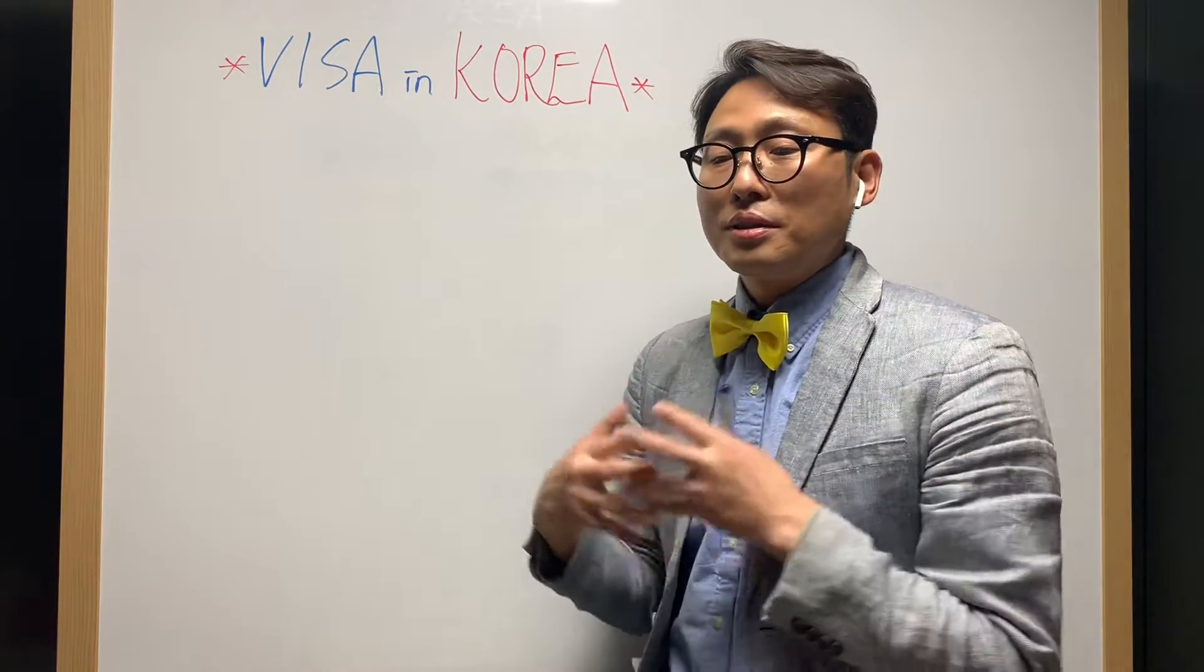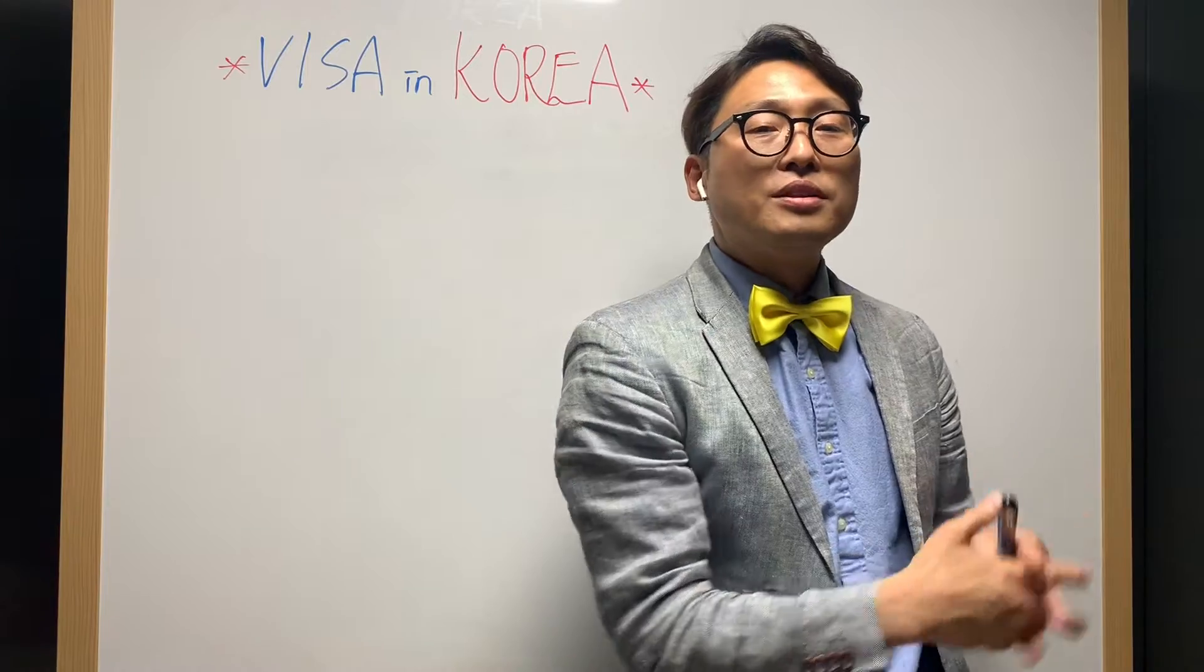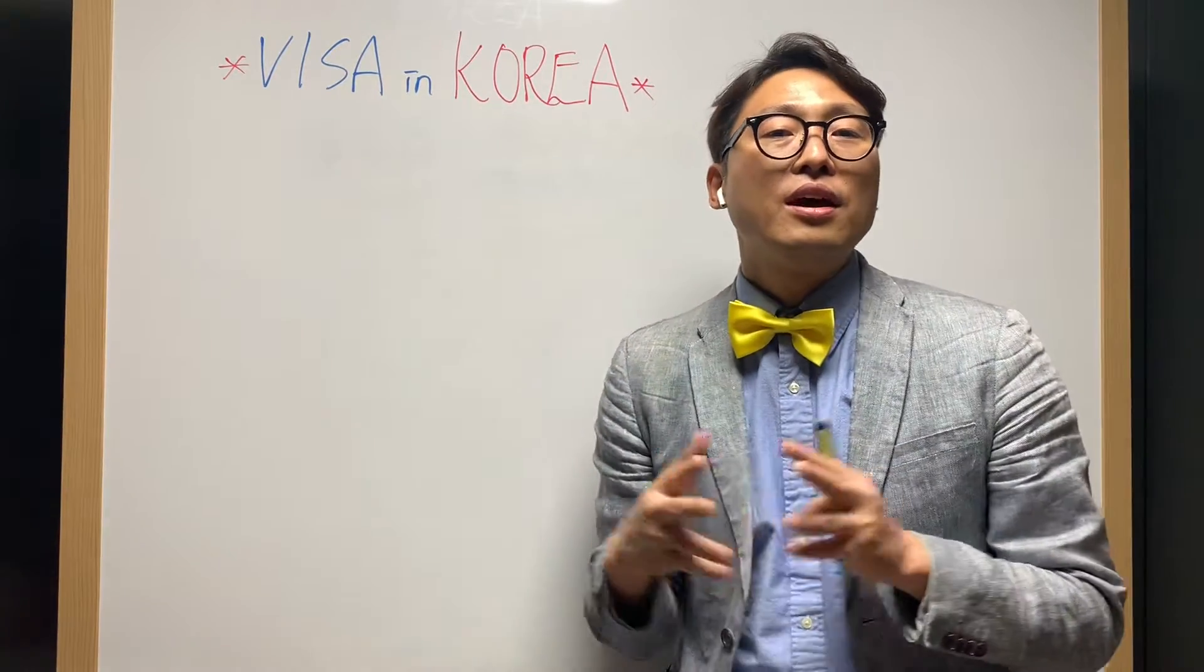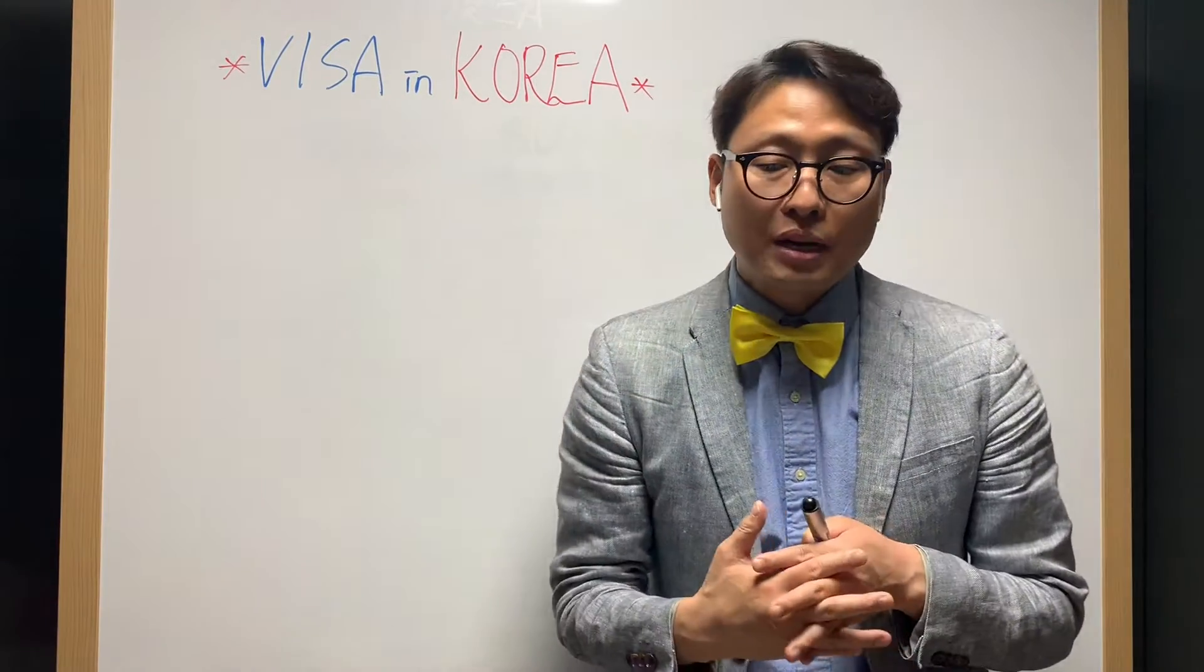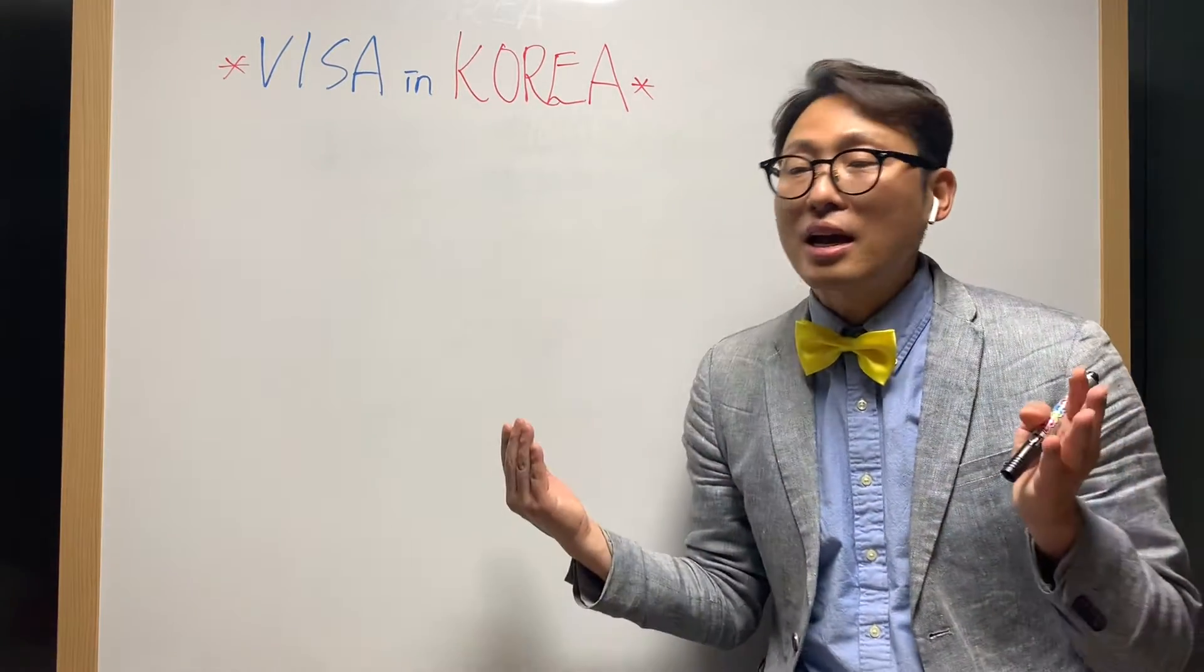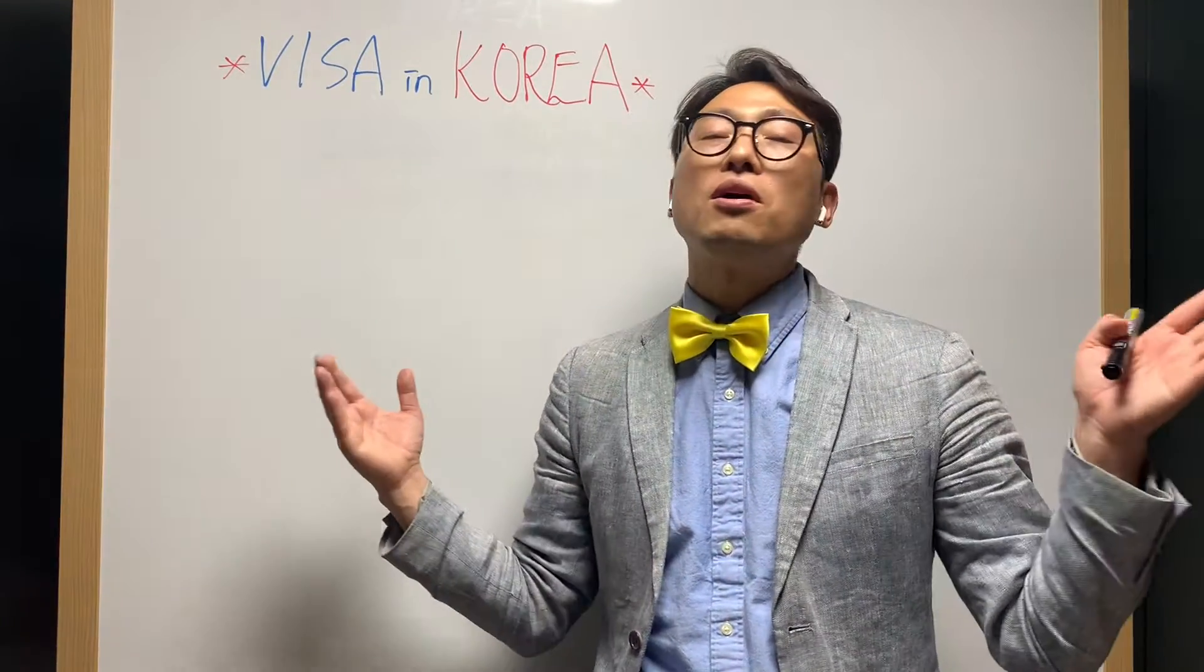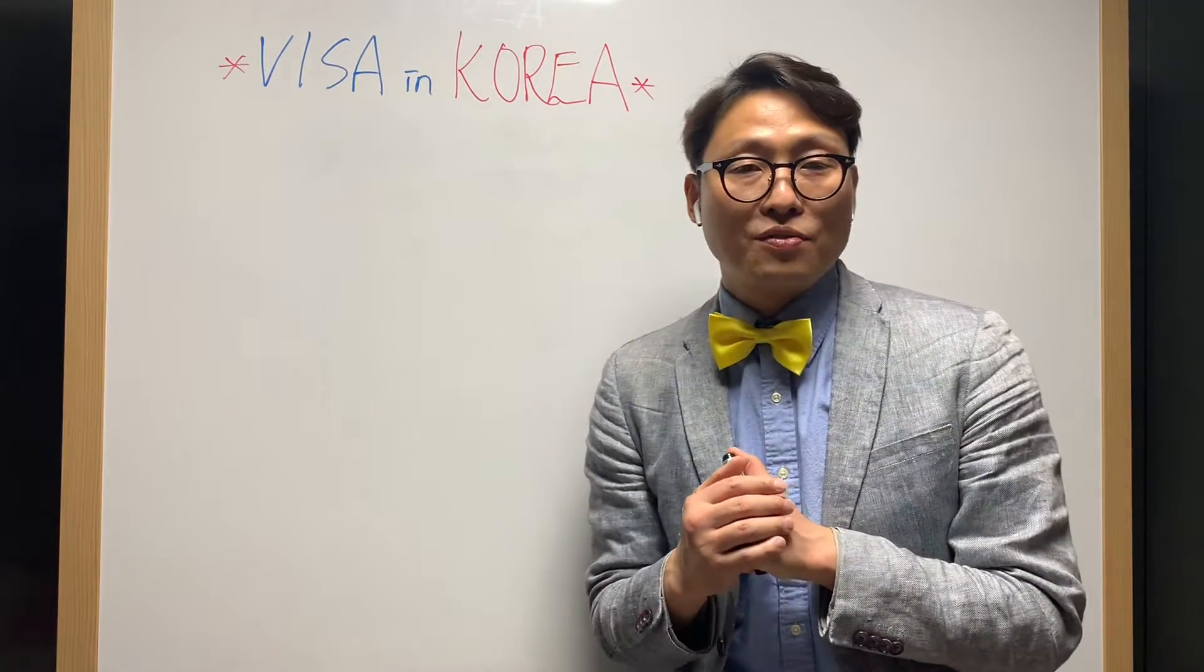I received several questions from previously E7-1 visa holders who are right now working in their professional field. They said they really want to change to F2-7, the outstanding talents resident visa, and also their final goal is to get the F5 permanent residence visa.